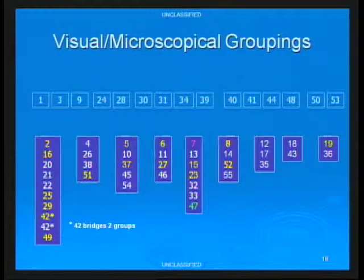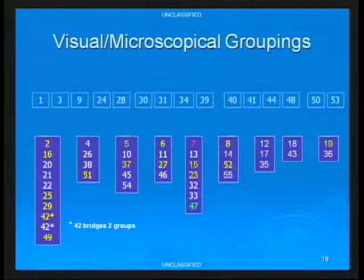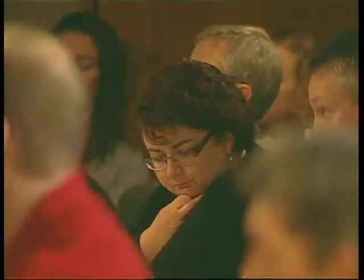At the end of the visual microscopical exams, five samples were discriminated and we have 13 groups established. Sample 42 ended up being a bridge between two groups — we could distinguish two sub-groups based on visual and microscopical exams, but sample 42 couldn't be distinguished from either. Rather than letting it bridge two groups we believed were different, we carried it forward as a member of both distinct groups.